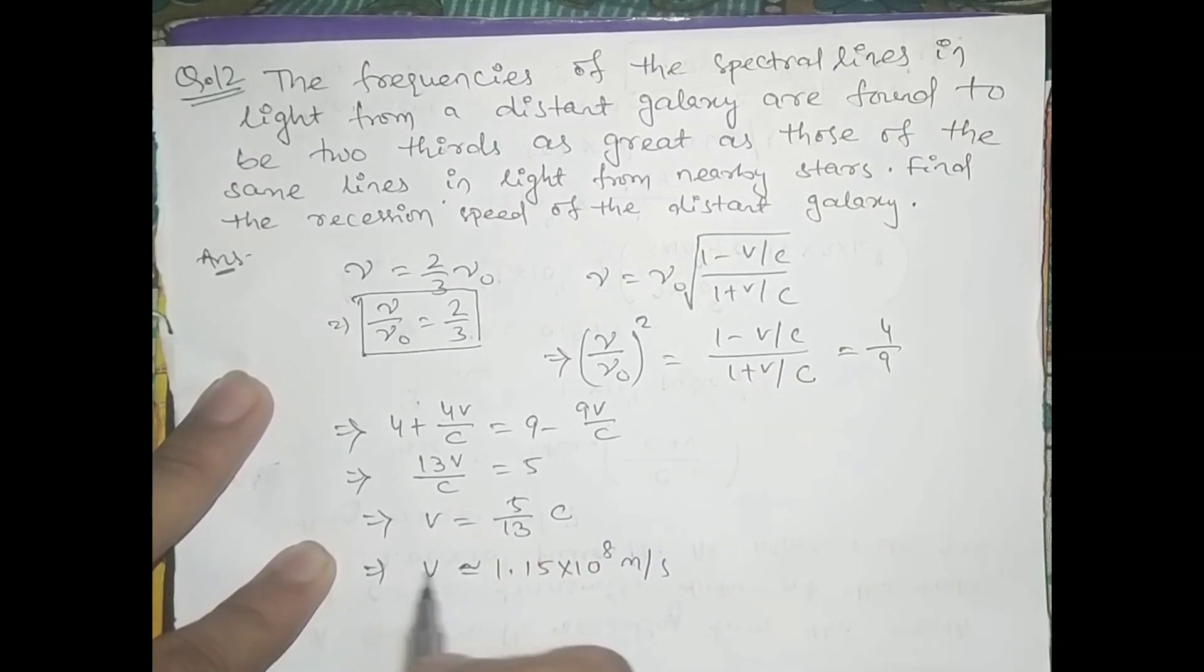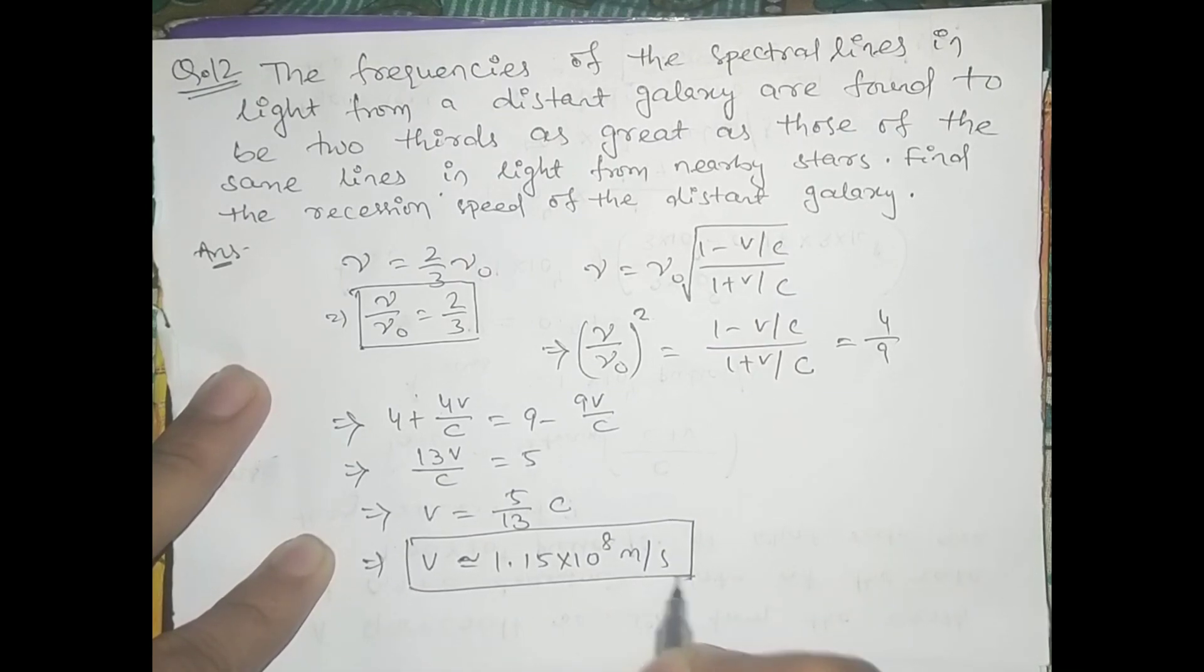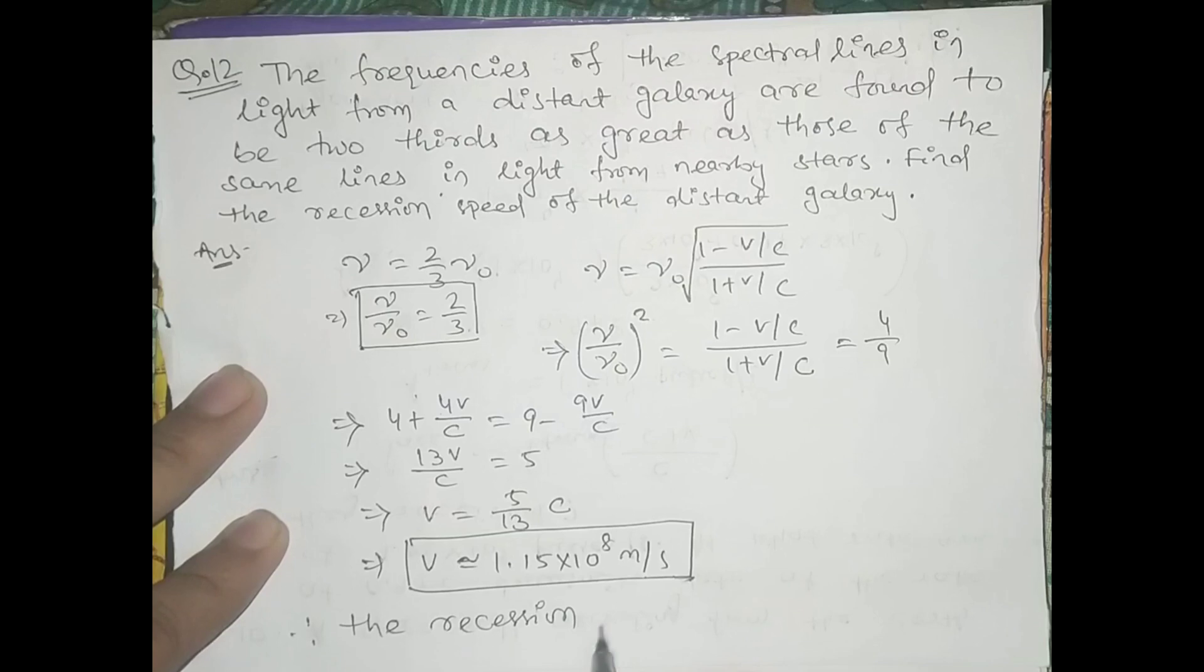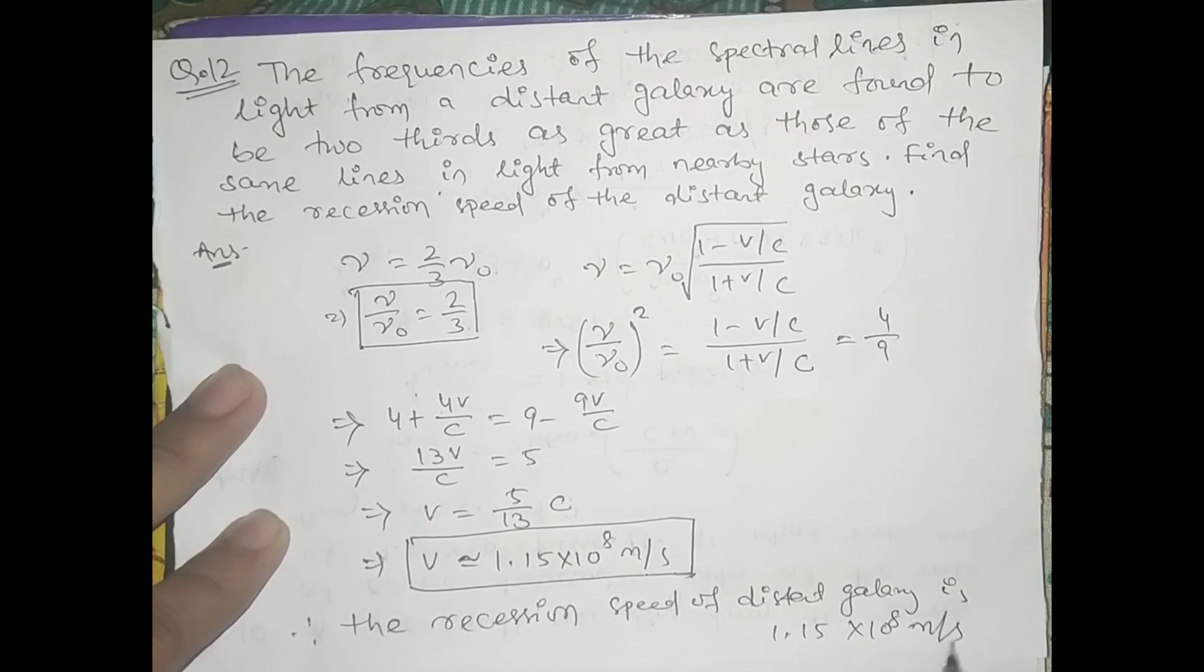This is not the exact value, this is an approximation. This is the recession speed. Therefore, the recession speed of the distant galaxy is 1.15 times 10⁸ meters per second.